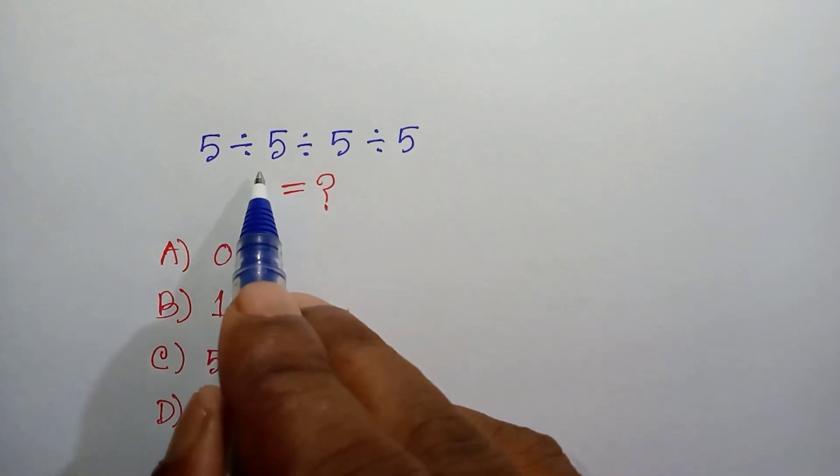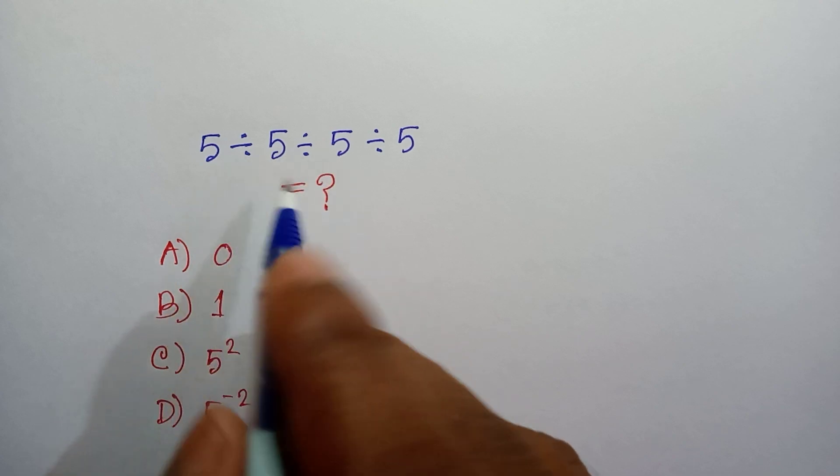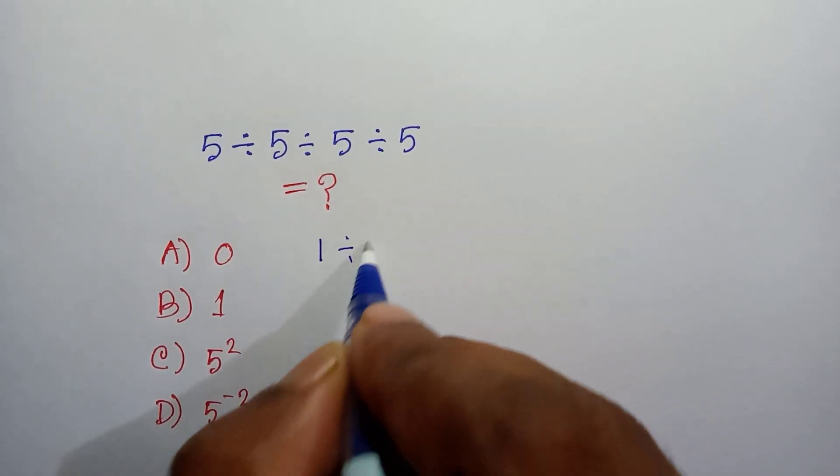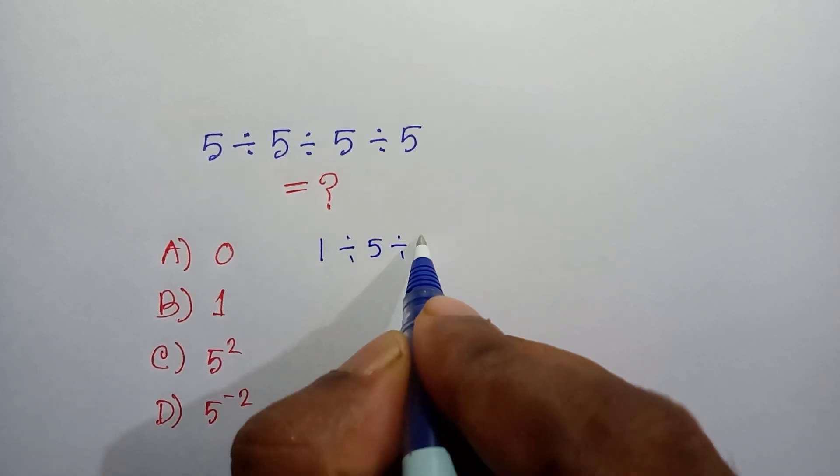So according to the BODMAS rule, we can write this case as 5 divided by 5, which is one, divided by 5, and divided by 5.